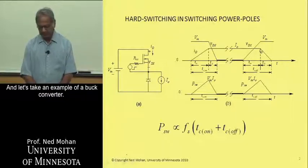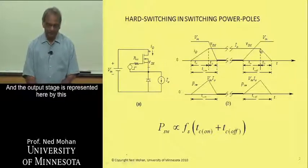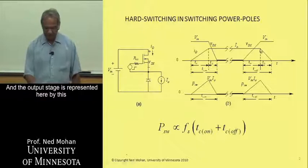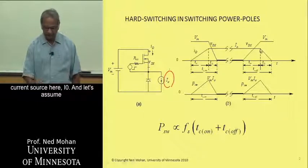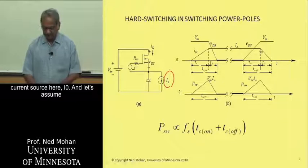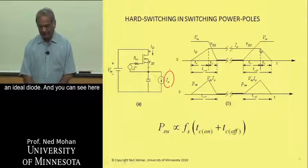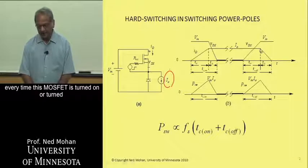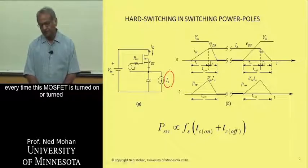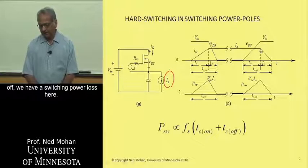And let's take an example of a buck converter. The output stage is represented by this current source here, I0. And let's assume an ideal diode. You can see here that every time this MOSFET is turned on or turned off, we have a switching power loss here.